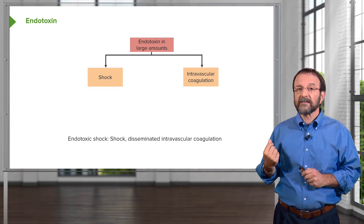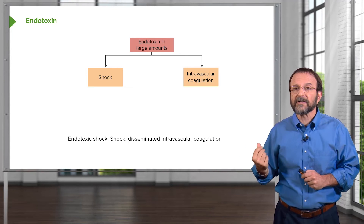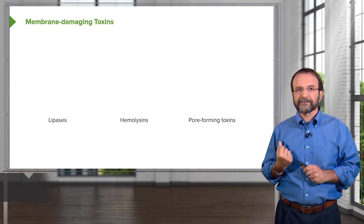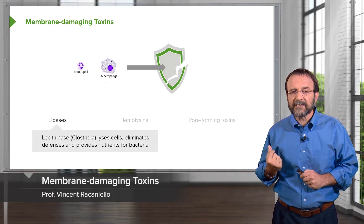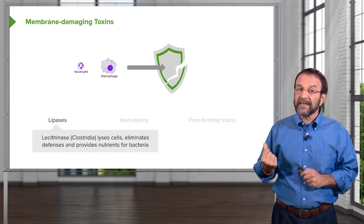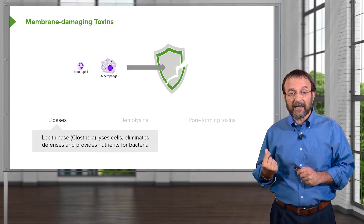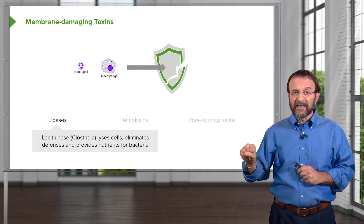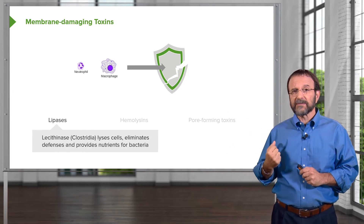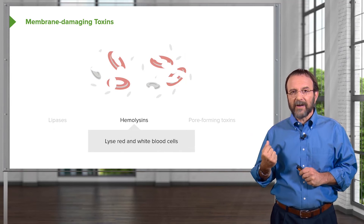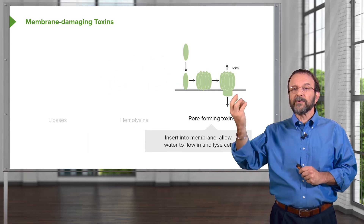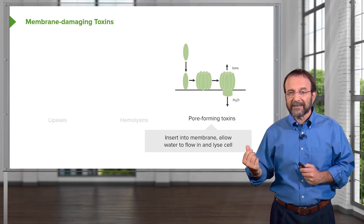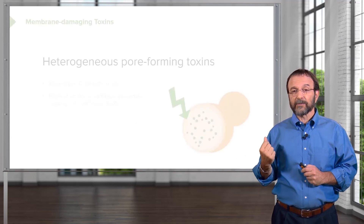At very high levels of endotoxin, it can result in shock, fluid loss caused by too many cytokines, and disseminated intravascular coagulation. There are also other membrane-damaging toxins, such as lipases — enzymes that digest lipids. An example is lecithinase from clostridial species, which can lyse cells, eliminate defenses, and provide nutrients for bacteria. Hemolysins can lyse red and white blood cells. There are also pore-forming toxins that insert into the membrane, allow water to flow in, and cause the cell to burst — a way for bacteria to avoid immune cells trying to eliminate them.